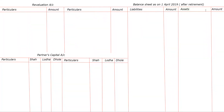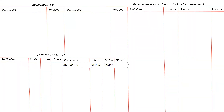Good morning all. Good morning sir. This problem is a textual problem, problem number five. Shaha, Lodha and Dole are the partners. First we will start posting the balances. On the liability side, by balance b/d: 45,000, 35,000 and 27,000.